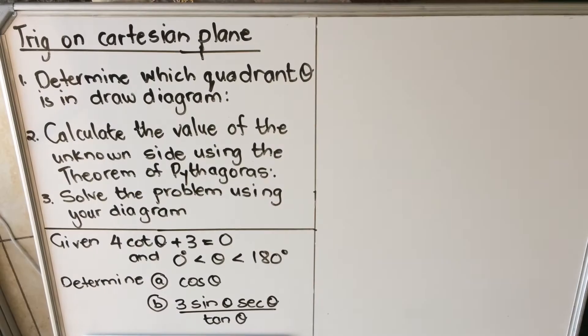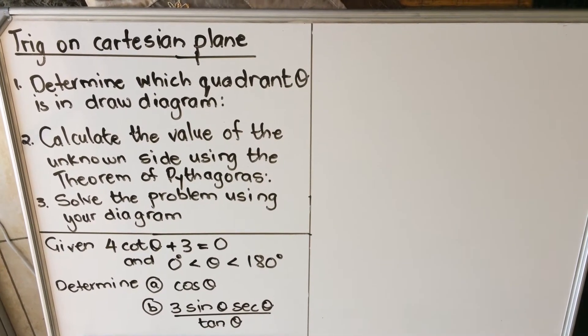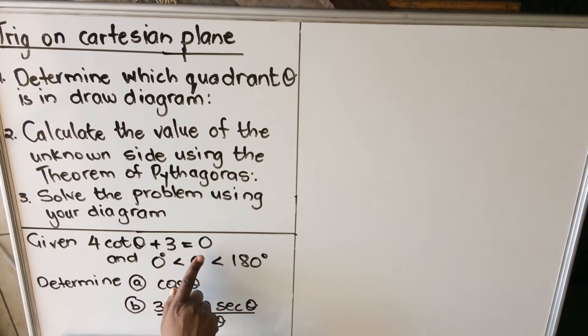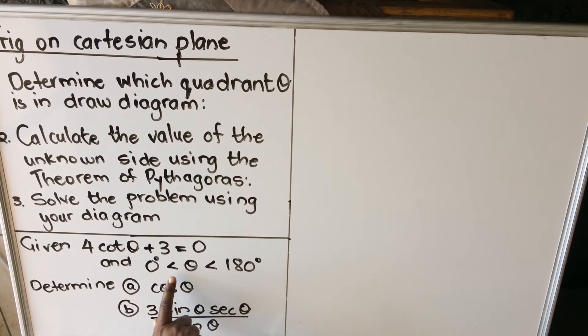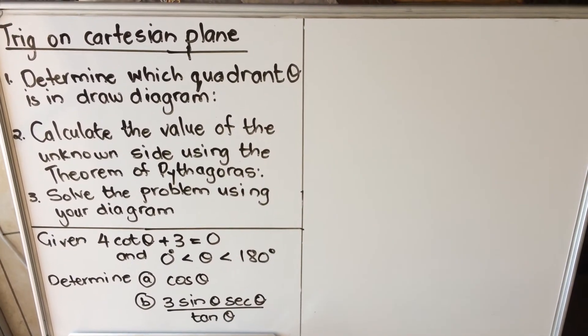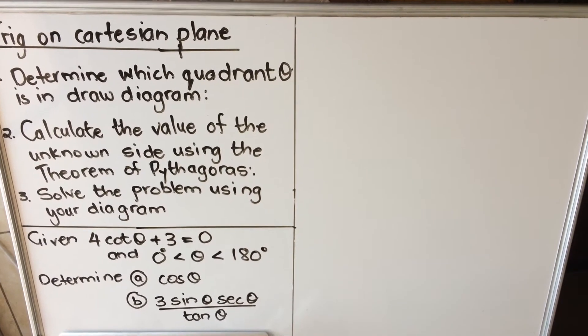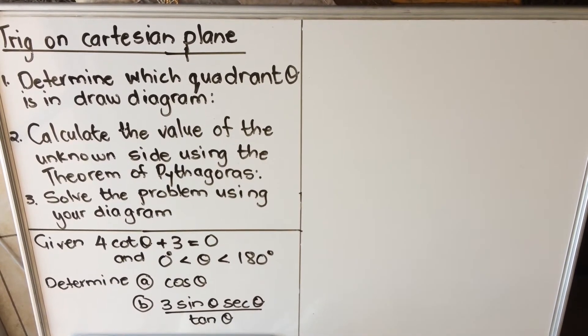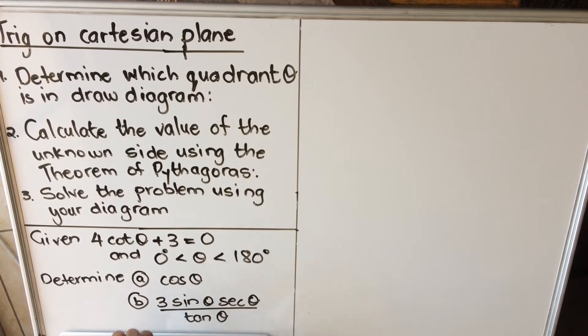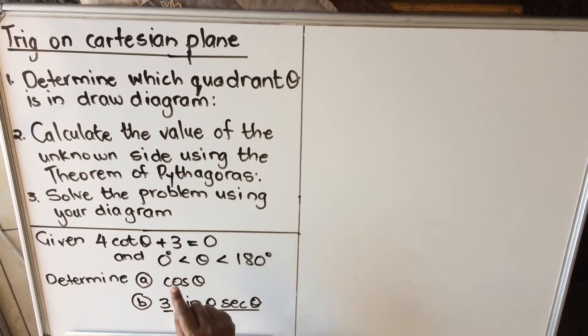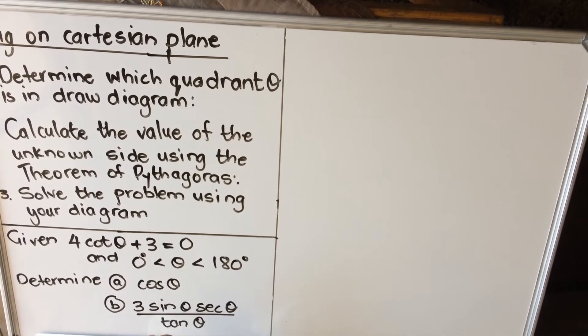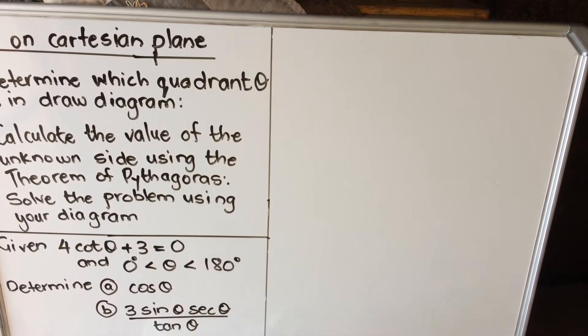I'm gonna do an example now of a question where you work in the Cartesian plane. Here we are given 4 cot theta plus 3 equals 0 and then theta is greater than 0 and less than 180. When you're given this kind of question, you need to follow these steps: first determine which quadrant theta is in, then you draw the diagram, calculate the value of the unknown side using the theorem of Pythagoras, and solve the problem using your diagram.